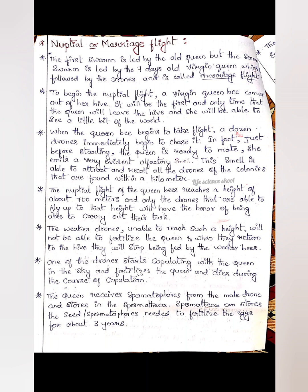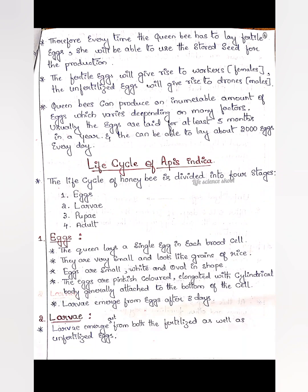After mating, the queen receives the spermatophores from the male drone and stores them in the spermatheca. In the spermatheca, she stores all the spermatophores needed to fertilize her eggs for her entire lifetime. Therefore, every time the queen bee needs to lay fertile eggs, she is able to use the stored seeds for reproduction. In her lifetime, she has the chance to mate with a drone only once.